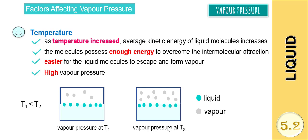At higher temperature, T2, we can see that the vapor molecules are more numerous compared to at T1. This is because as the temperature increases, the average kinetic energy of liquid molecules also increases. The molecules possess enough energy to overcome the intermolecular attraction, so it is easier for the liquid molecules to escape and form vapor, and thus the vapor pressure increases.